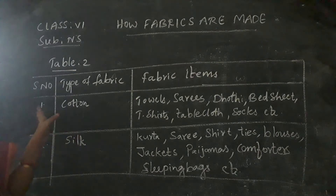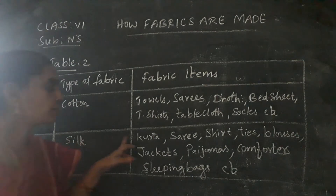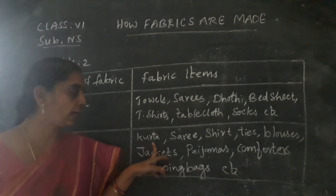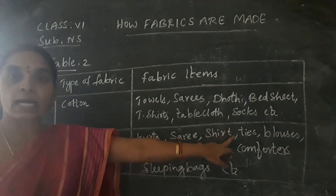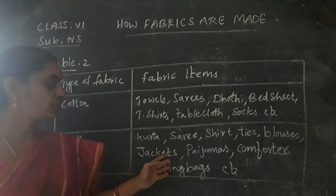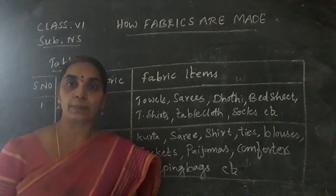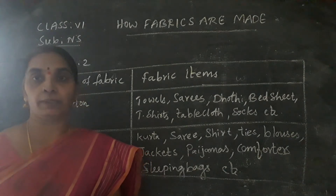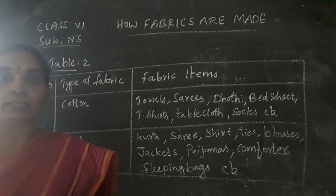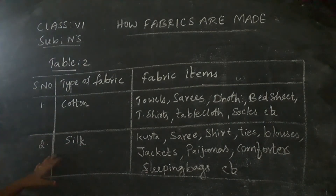Next, coming to silk. With silk fabric you have kurtas, saris, shirts, ties, blouses, jackets, silk jackets, comforters or sleeping bags or suits for comfort purposes. Bread linen are also made with silk fabric.